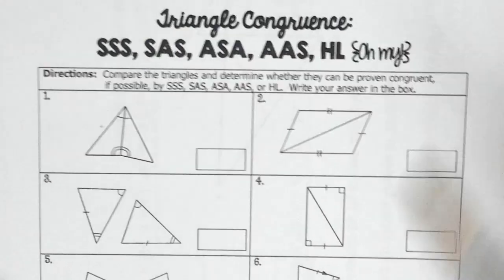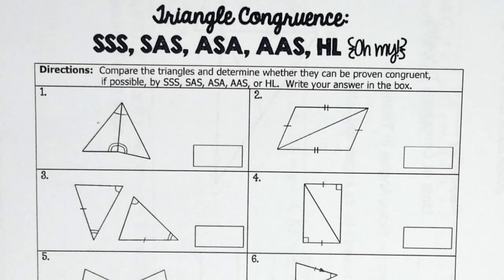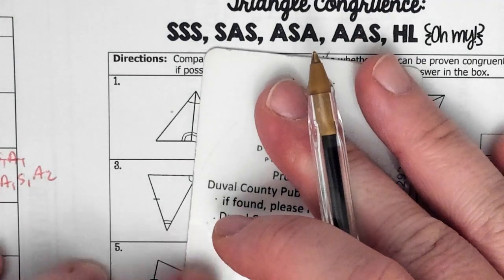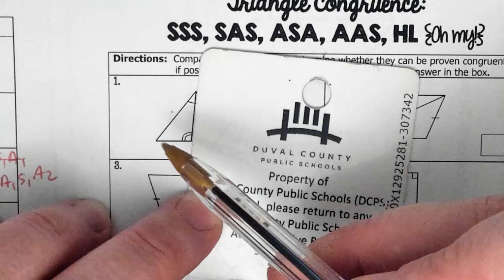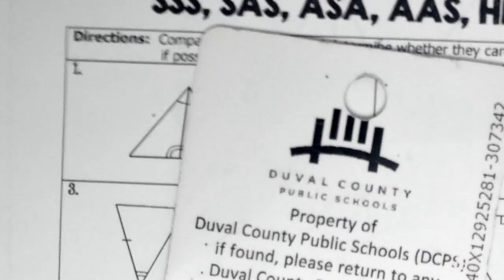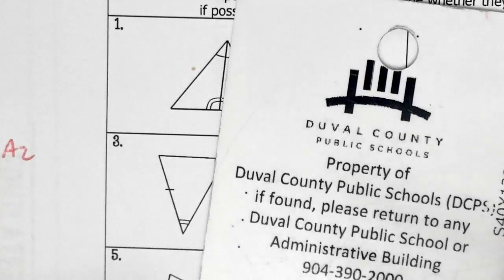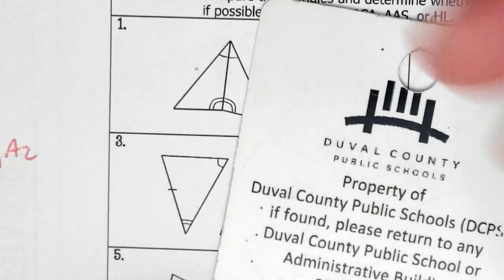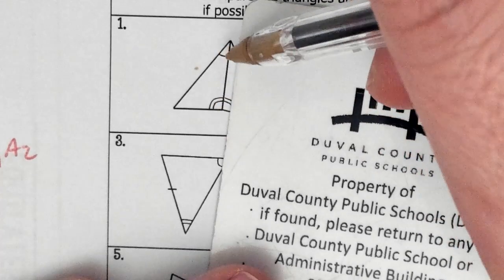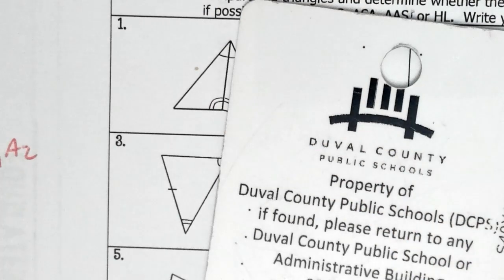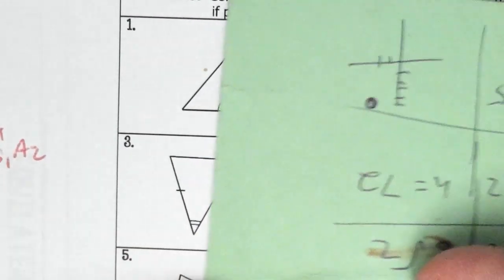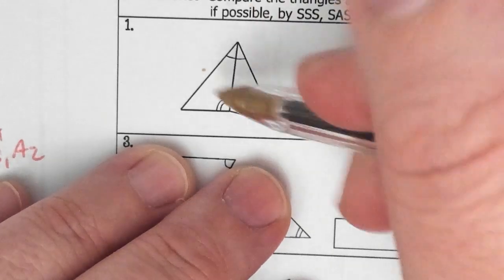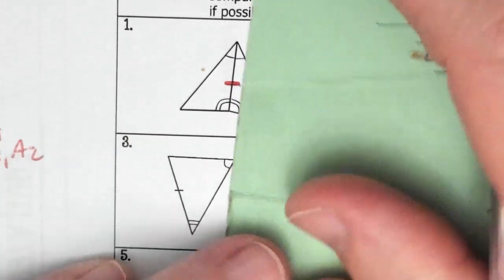We're on page 12, doing numbers one through four. On number one, if I cover up one triangle and focus on just one triangle, how many bits of information do we have? We have two bits — this angle is equal to this angle, and these two angles are equal to each other. But we need at least three bits of information. We're going to use reflexive property — they share a side, so this side would be equal to itself. Now we should have enough.